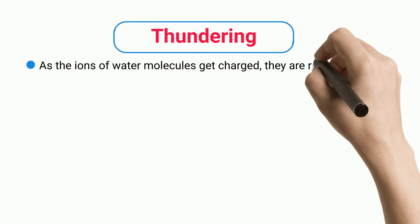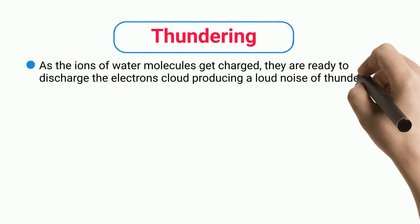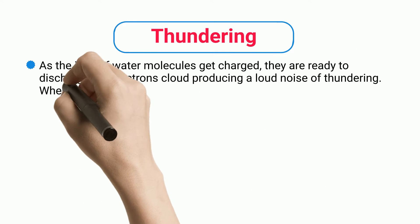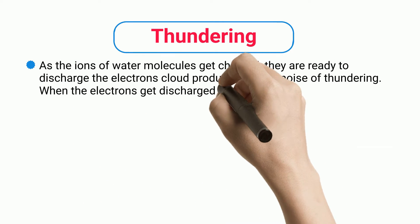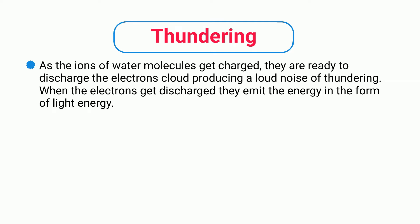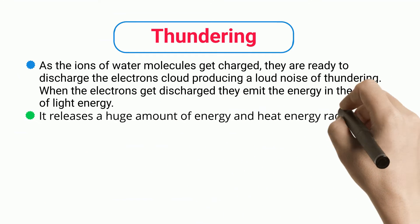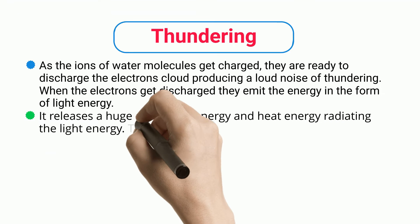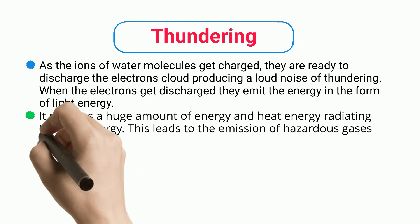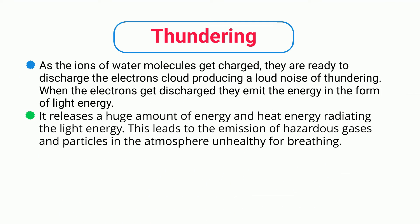Thundering: As the ions of water molecules get charged, they are ready to discharge electrons from the cloud, producing a loud noise of thundering. When the electrons get discharged, they emit energy in the form of light energy, releasing a huge amount of energy and heat.